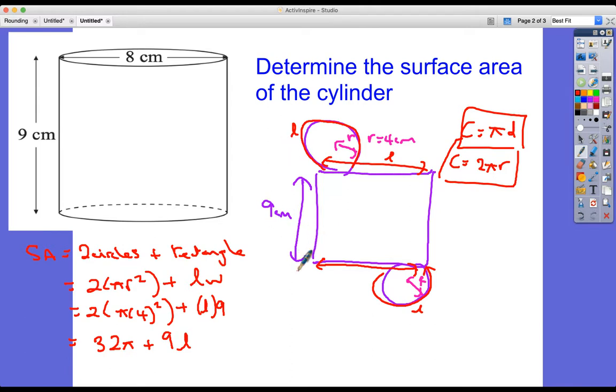So we can just finish this off now. So l is the circumference = π × 8, or 2πr, which is 2π × 4, which is the same thing, 8π.